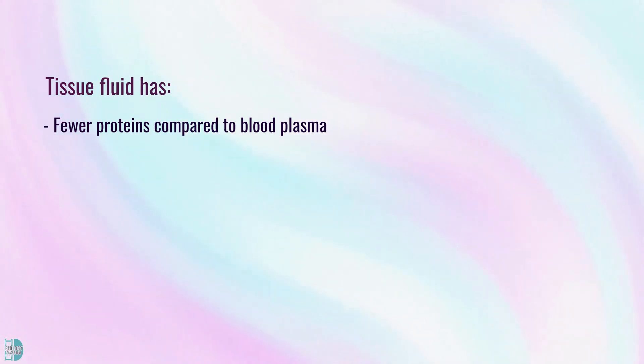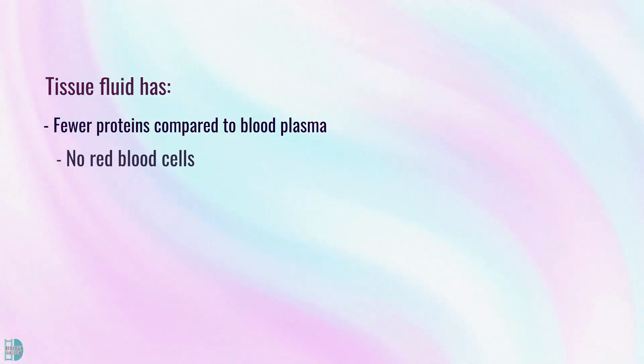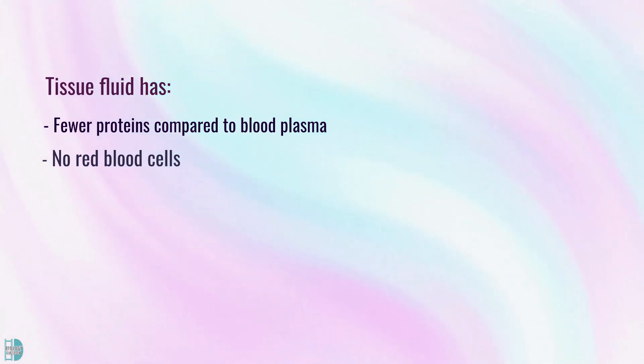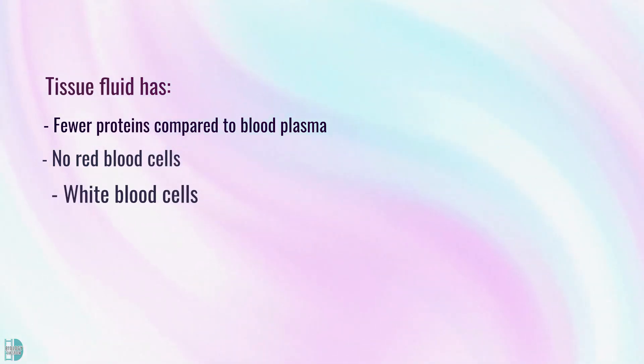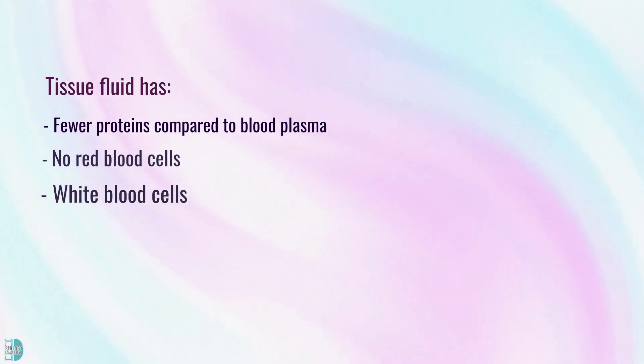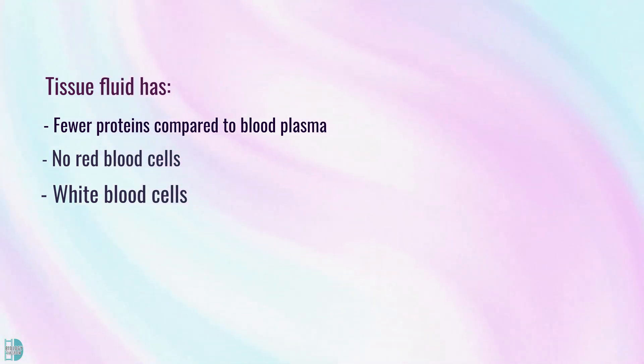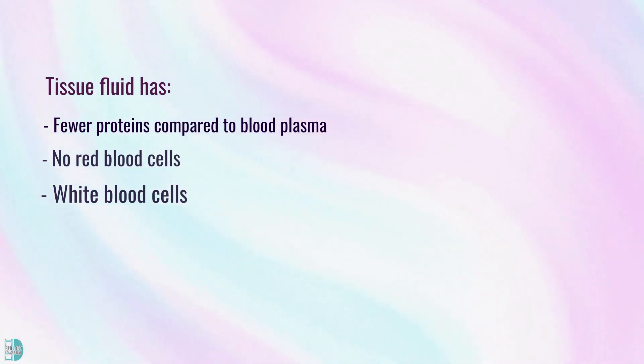Tissue fluid does not contain red blood cells. However, you will find white blood cells in the tissue fluid, because white blood cells can squeeze through the wall and move freely in the tissue fluid.